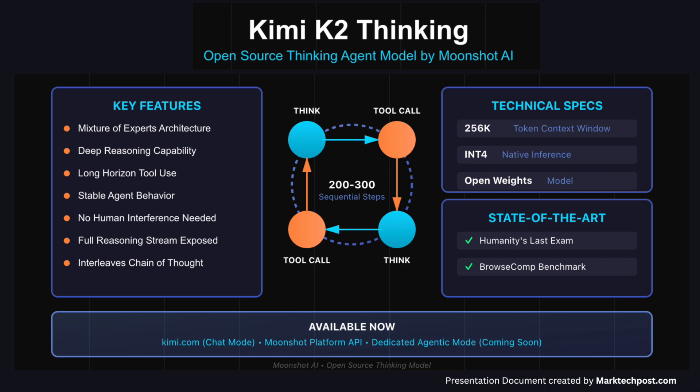Kimi K2 Thinking is described as the latest, most capable version of Moonshot's open source thinking model. It is built as a thinking agent that reasons step by step and dynamically invokes tools during inference. The model is designed to interleave chain of thought with function calls so it can read, think, call a tool, think again, and repeat for hundreds of steps.